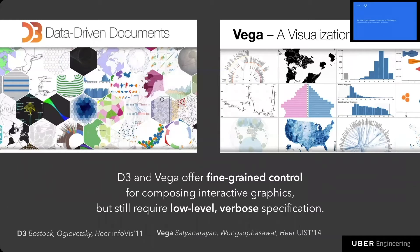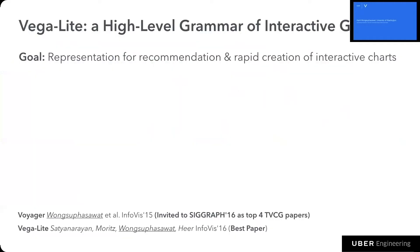As I mentioned earlier, they require a lot of technical expertise — basically you have to be a JavaScript ninja to use D3 — and require verbose specification, like creating a bar chart may require a hundred lines of code. So building on top of these tools, we designed the VegaLite grammar for representing charts in our recommender system and for supporting rapid creation of interactive charts.